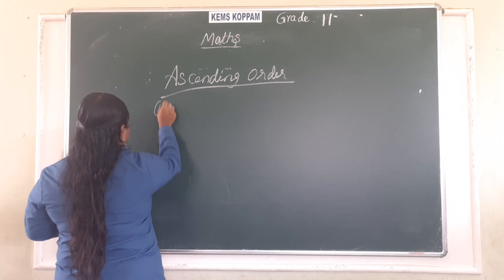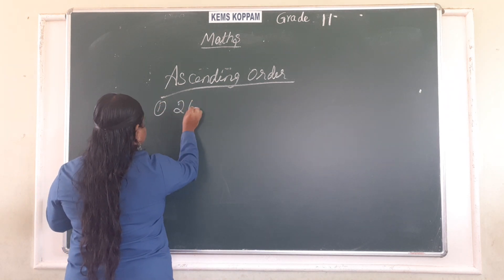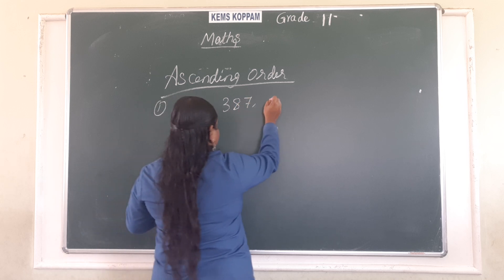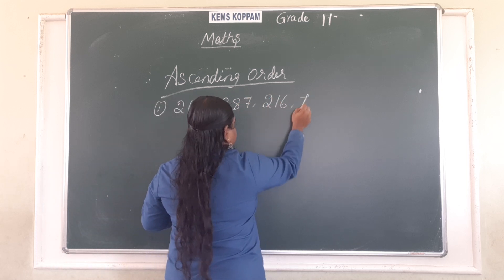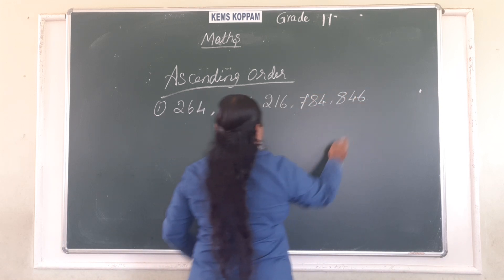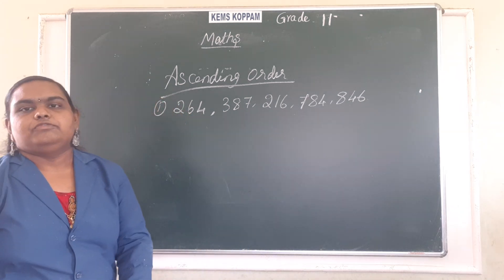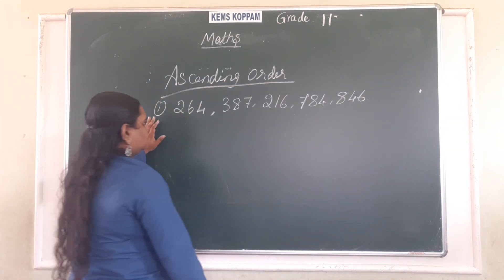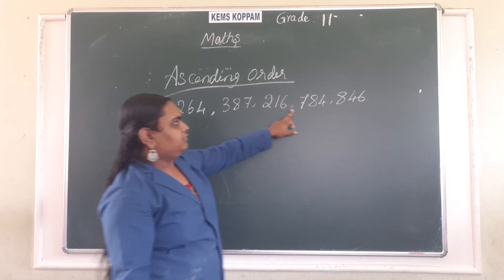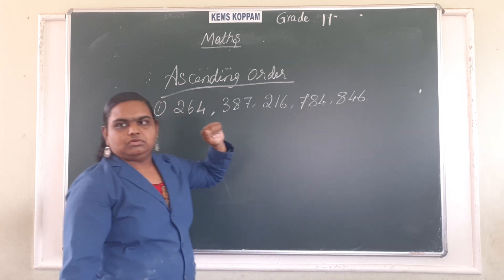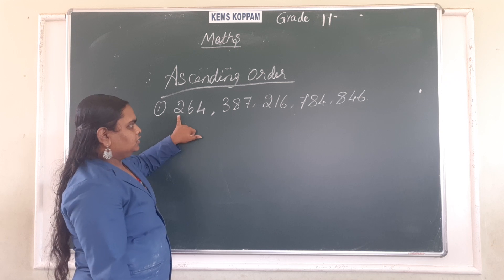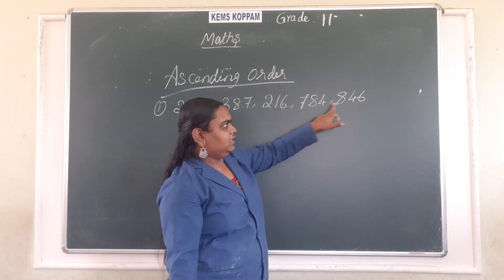So first numbers: two hundred and sixty-four, three hundred and eighty-seven, two hundred and sixteen, seven hundred and eighty-four, eight hundred and forty-six. These are the five numbers. First we have to see the first digits of every number. First digits are: two, three, two, seven, eight.